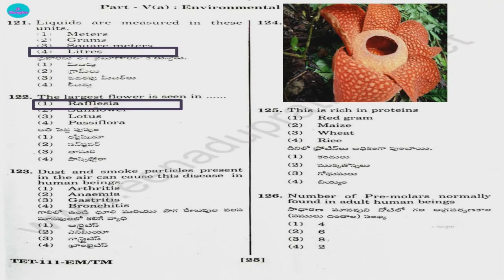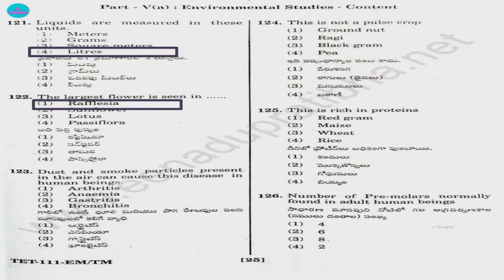Question number 123. Dust and smoke particles present in the air can cause this disease in human beings: 1) arthritis, 2) anemia, 3) gastritis, 4) bronchitis. Answer is option 4, bronchitis.